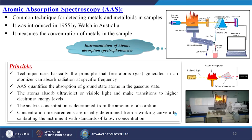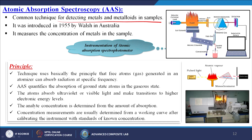The next technique is called atomic absorption spectroscopy, in short AAS. It is a common technique for detecting metals and metalloids in samples. It was introduced in 1955 by Walsh in Australia. It measures the concentration of metals in the sample. The instrumentation of the atomic absorption spectrophotometer consists of: a hollow cathode lamp, then a burner where the sample is burned, then atomic absorption takes place, then a slit, then a monochromator, then a detector. There is a mixing chamber and sample flow, and fuel gas and oxidizing gas are introduced. Data goes directly from the detector to the computer.